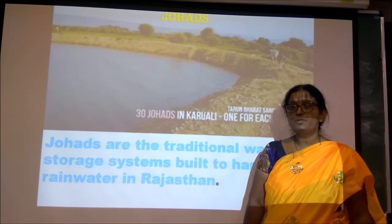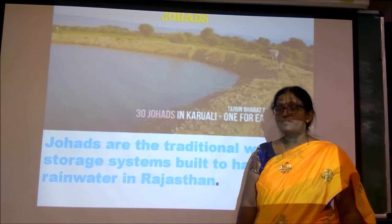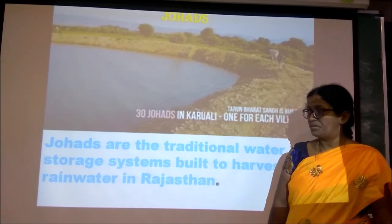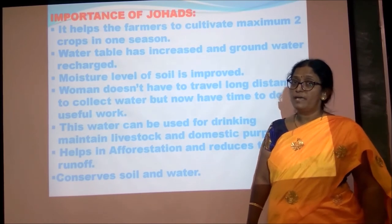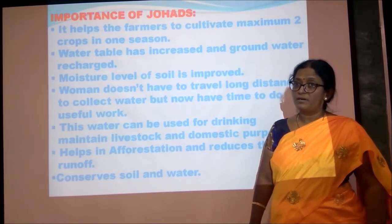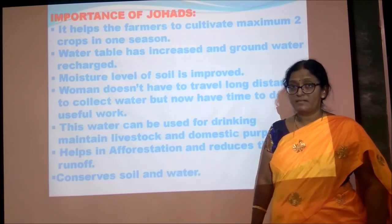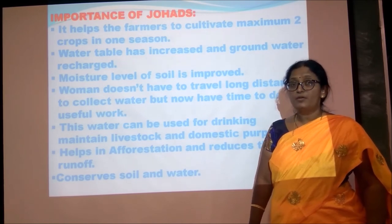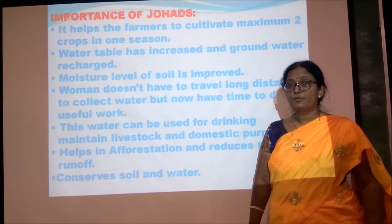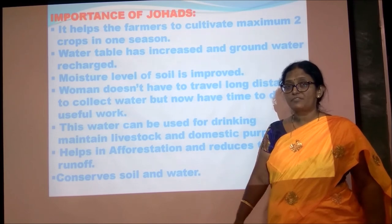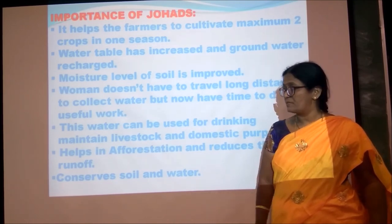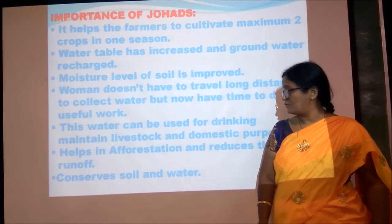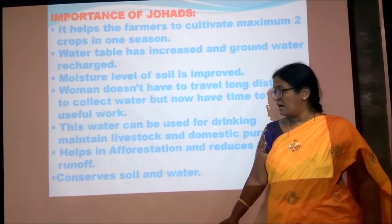Johads are traditional water storage systems mainly used to harvest rainwater. Importance of johads: They help farmers cultivate up to two crops in one season. Ground water is recharged and the water table has increased. Soil moisture also increased. Earlier women had to walk three to four kilometers to fetch water; now they have extra time to learn skills in art, crafts, and to pursue education. Johad water can be used for domestic purposes, maintaining livestock, and afforestation. It conserves both soil and water.